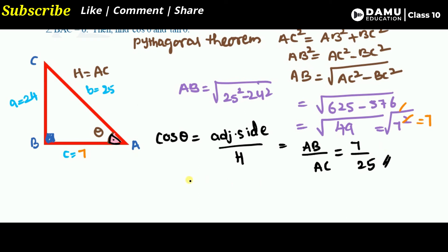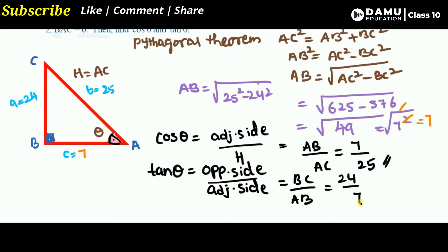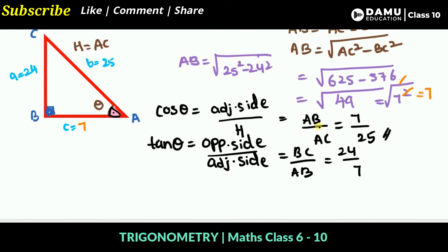Next, tan theta equals opposite side divided by adjacent side. For angle theta, the opposite side is BC and the adjacent side is AB. So tan theta = BC/AB = 24/7.